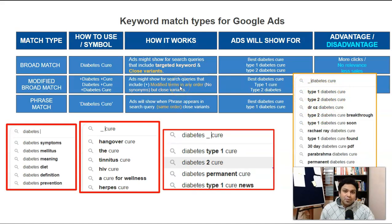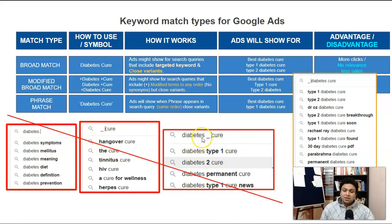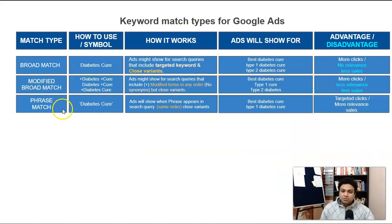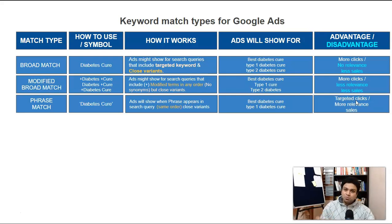With phrase match, the ad will NOT show for queries like 'diabetes symptom' or 'diabetes mellitus' because both terms aren't together in that search query. Any search query where 'diabetes' and 'cure' appear in the same order will trigger the ad. Using phrase match you get more targeted clicks because you've narrowed down the audience, reaching the right people. This increases your quality score as well.